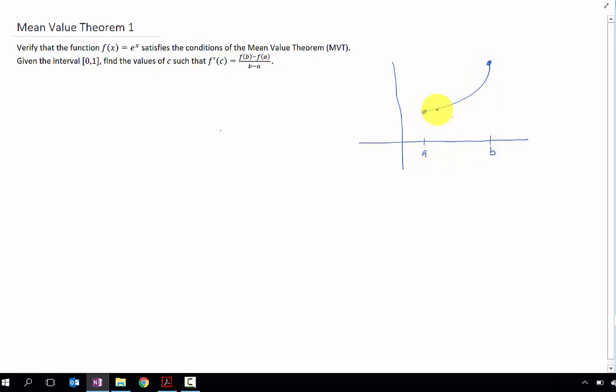there is some place in between a and b here where the slope of your tangent line is equal to the slope of the secant line between those two points. We typically call that x value in between a and b, c,